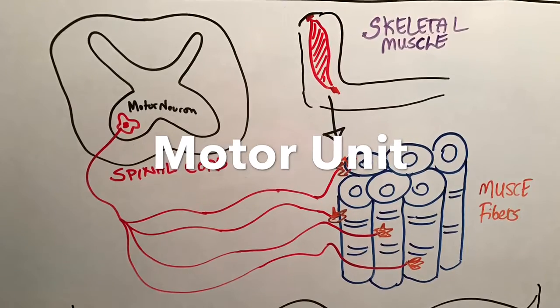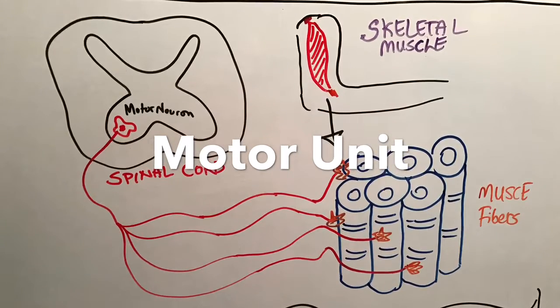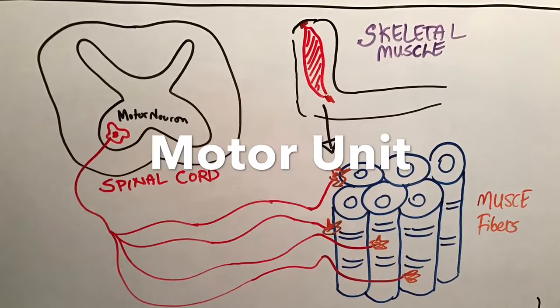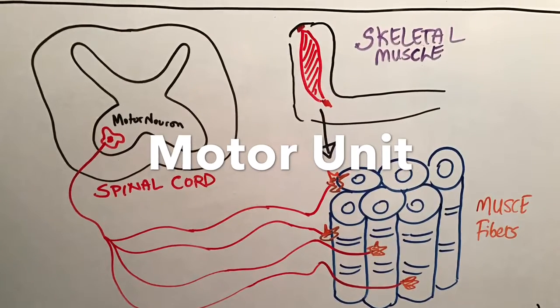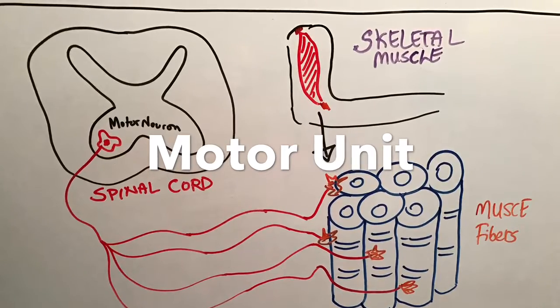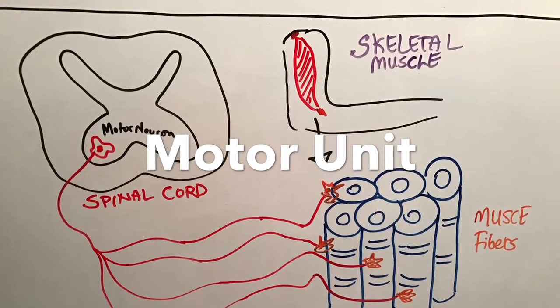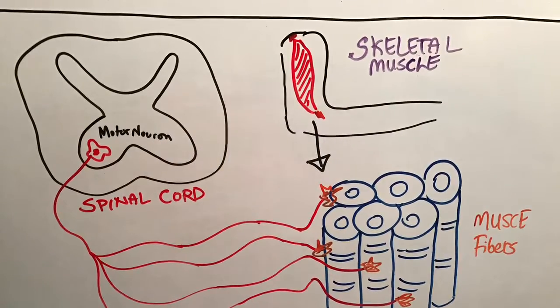The motor neuron connects to its group of muscle fibers forming the basic functional block called a motor unit. Motor neurons can be polarized by their conduction velocities of their neuronal axons that connect the muscle fibers.